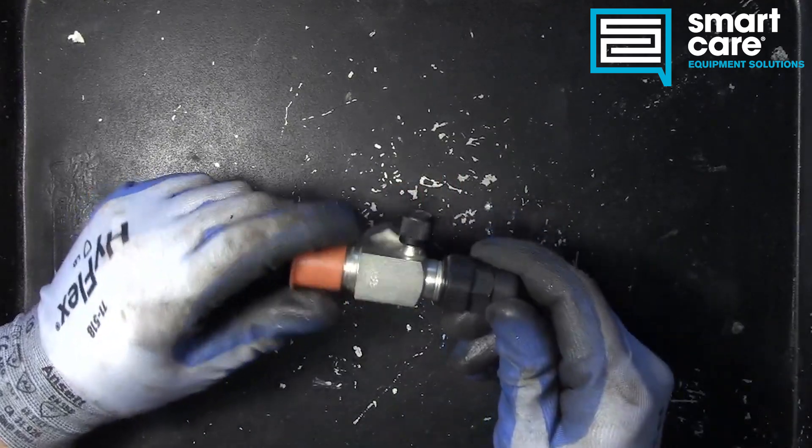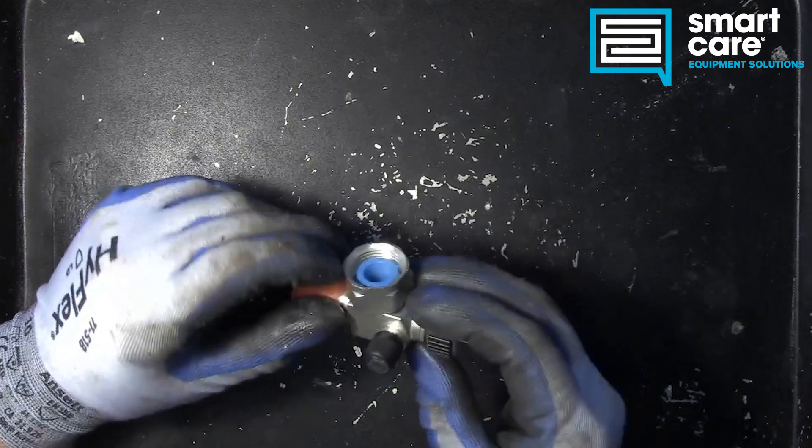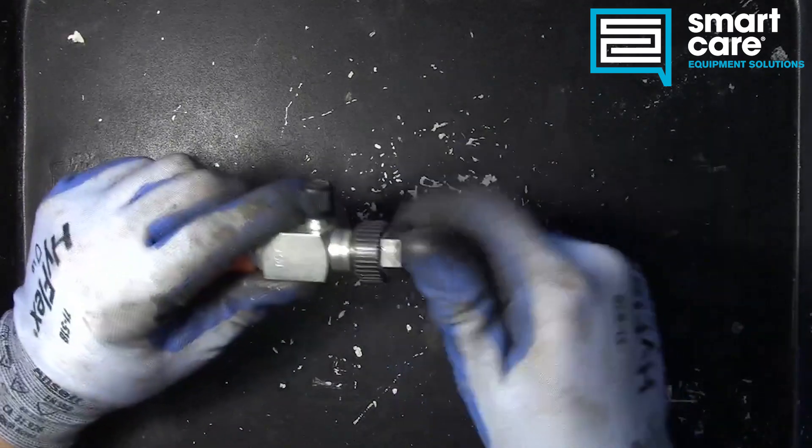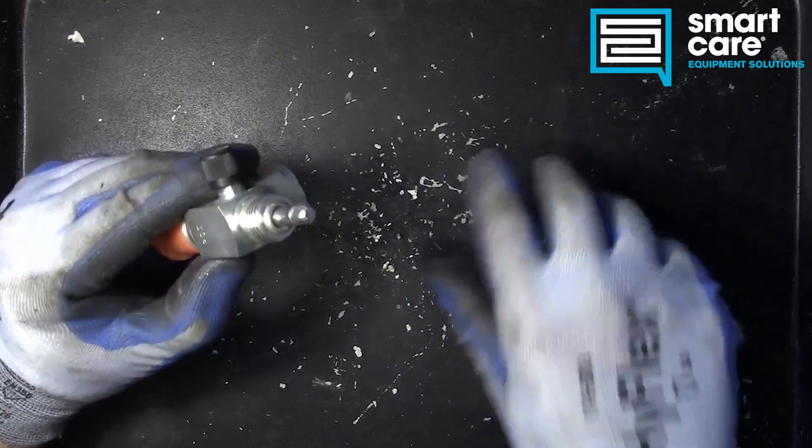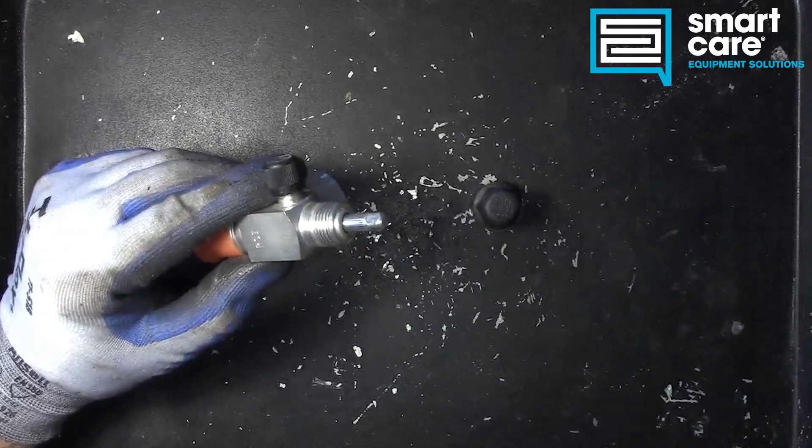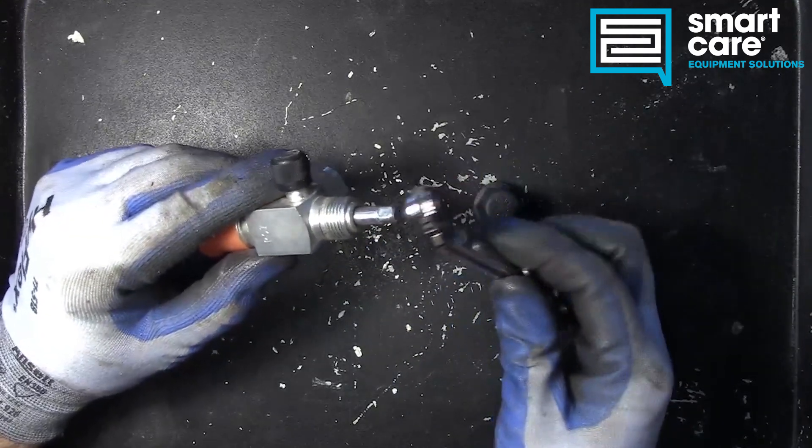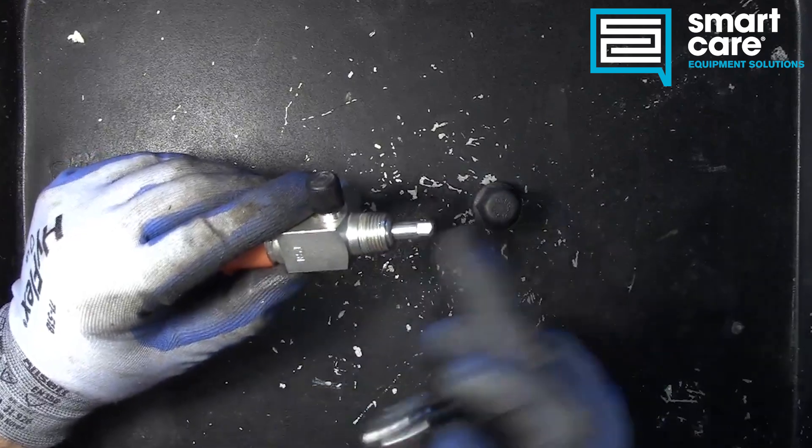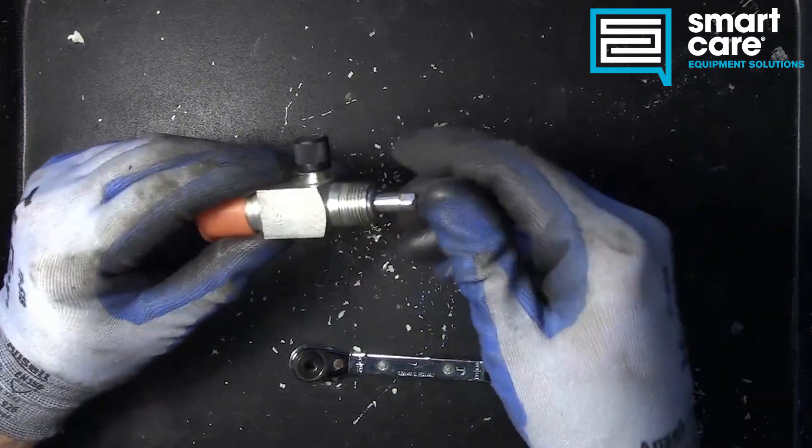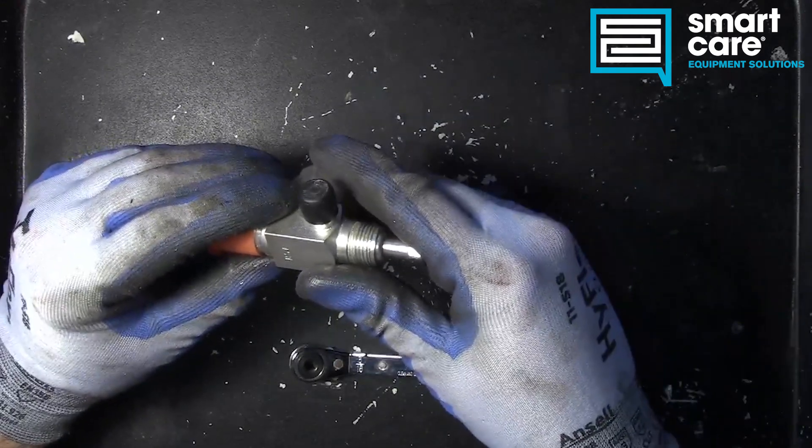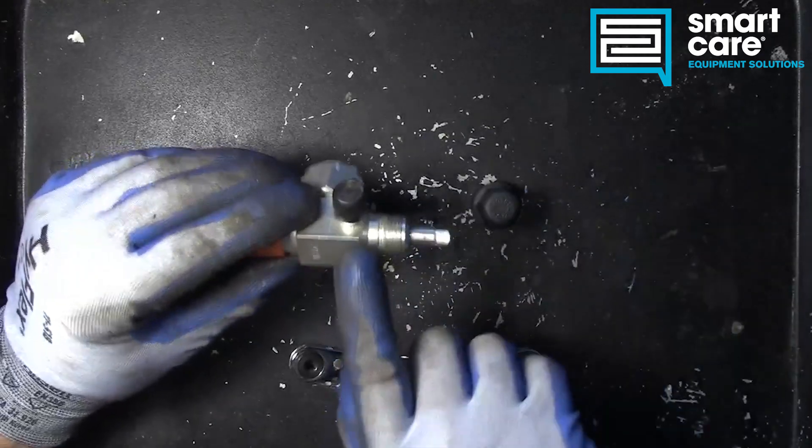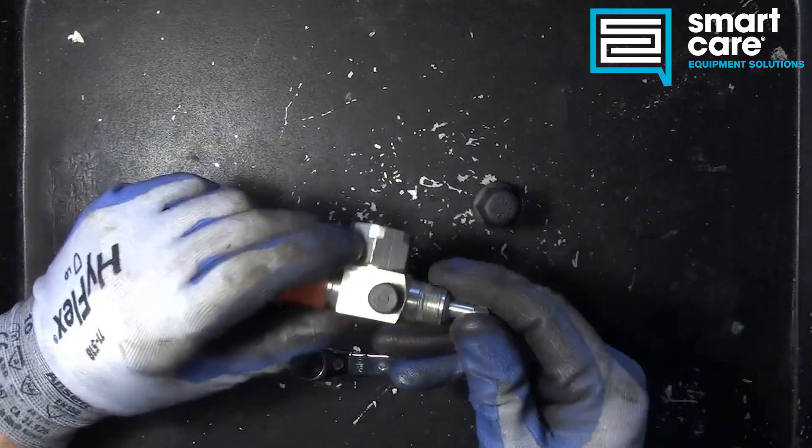So the way this is typically used is it's installed at the compressor or at a large component in the system, and you can open up these covers and access the stem, which you can then adjust using your refrigeration service wrench. You can adjust this stem to three different positions, and depending on which position it's in, you either have the system completely closed down, or you have access to the service port, or the service port is sealed and refrigerant flows normally.